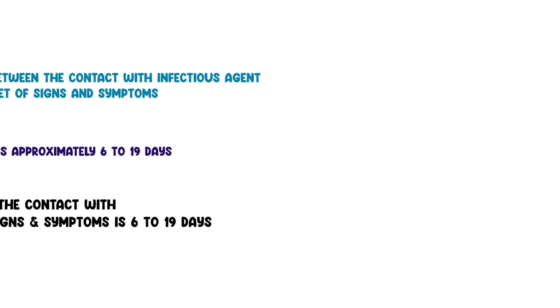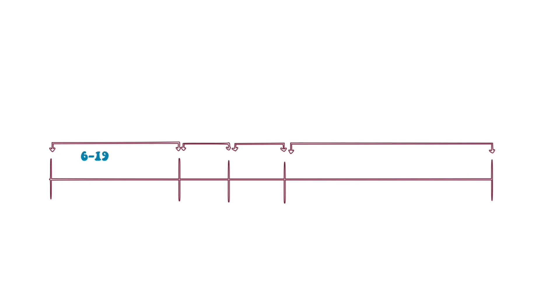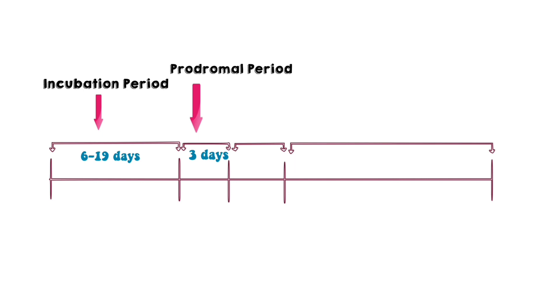Now let's understand the clinical features of measles using this figure. The incubation period takes six to nineteen days, the prodromal period takes three days, the exanthem phase takes four days, and then finally the recovery period takes ten to fourteen days.